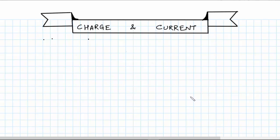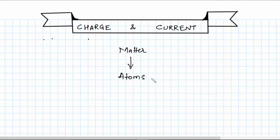From basic physics, we know that all matter is made up of atoms. Everything in this world is matter, and all matter is made up of atoms. Atoms are further divided into electrons, protons, and neutrons.